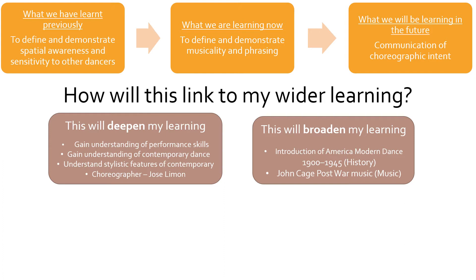This will broaden our learning because we're still linking to history - learning about the American modern dance history, where it came from, the origins. And we're still going to look at some different music, which links to the subject of music, because John Cage, as we learned last lesson, was the life partner of Merce Cunningham, and their collaboration was about music and dance together.